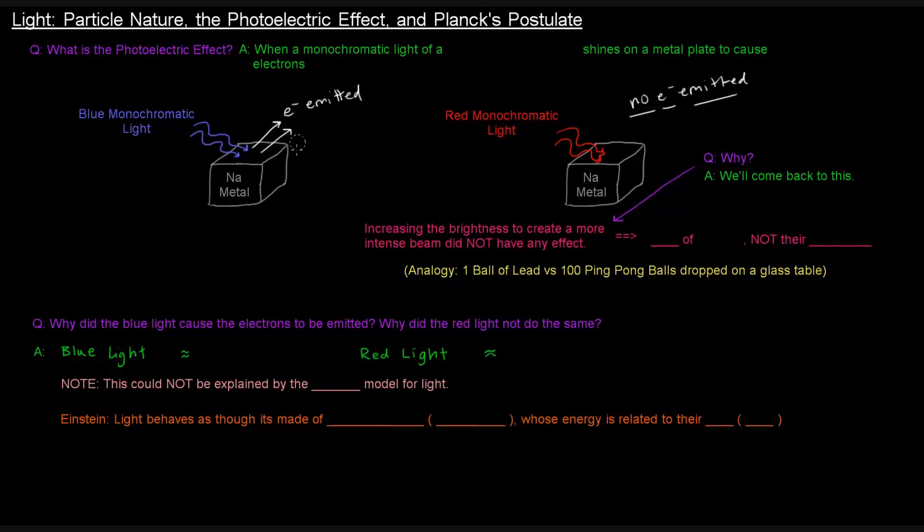But this concept over here, what's going on with the blue monochromatic light, this is the photoelectric effect. When a monochromatic light of a high enough frequency shines on a metal plate to cause electrons to be emitted. So why did the blue light cause the electrons to be emitted, and why did the red light not do the same?